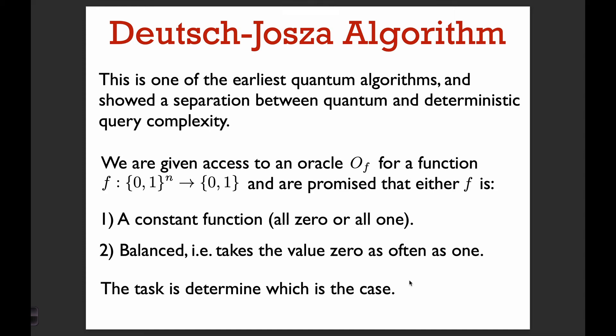Now we have everything we need to go over the Deutsch-Jozsa and Bernstein-Vazirani algorithms. Let's start with Deutsch-Jozsa. This is one of the first quantum algorithms that formally showed that a quantum algorithm can do something that a classical deterministic algorithm cannot.